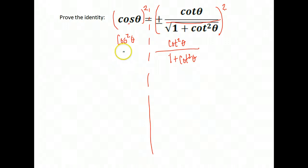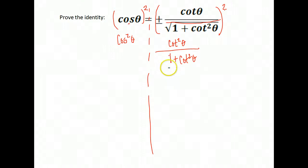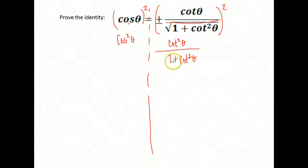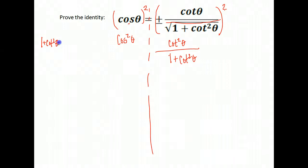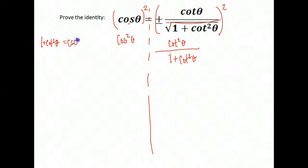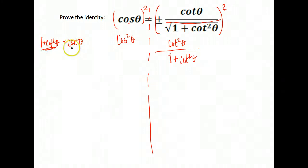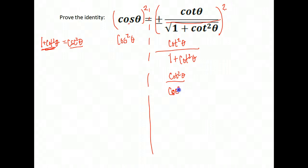From here, we have cosine on one side and cotangents on the other. Do we have any identities we can use? Look at your identities — a lot of times expressions like one plus cotangent squared equal something. Does one plus cotangent squared equal anything? It does. One of our identities says one plus cotangent squared equals cosecant squared. So we replace one plus cotangent squared with cosecant squared, giving us cotangent squared theta over cosecant squared theta.